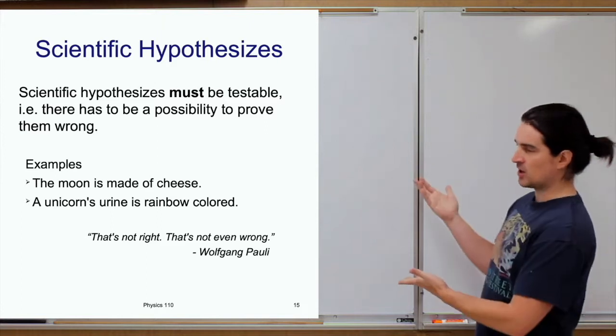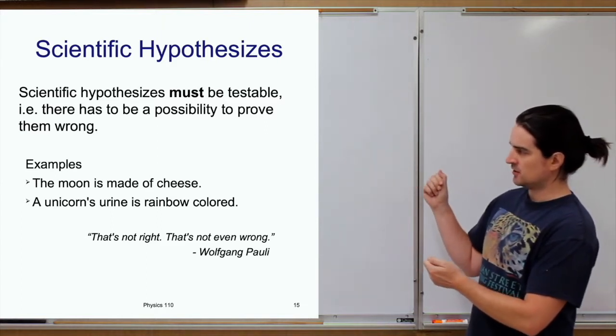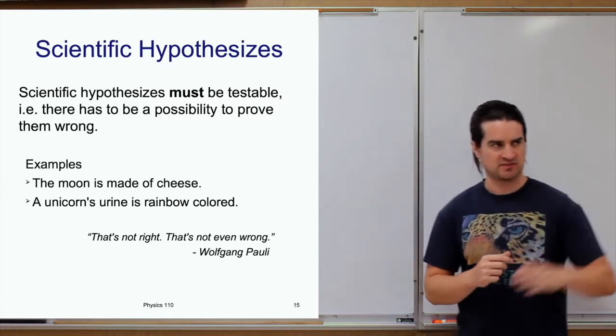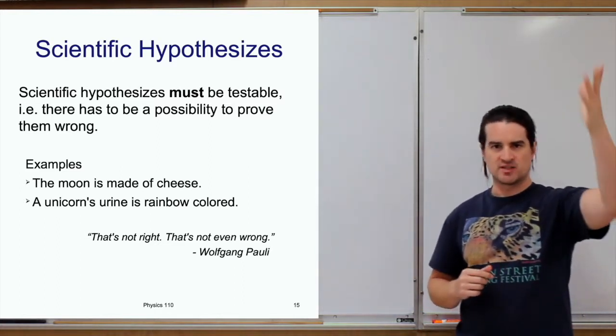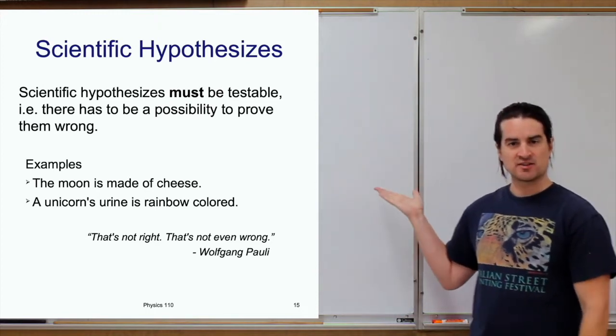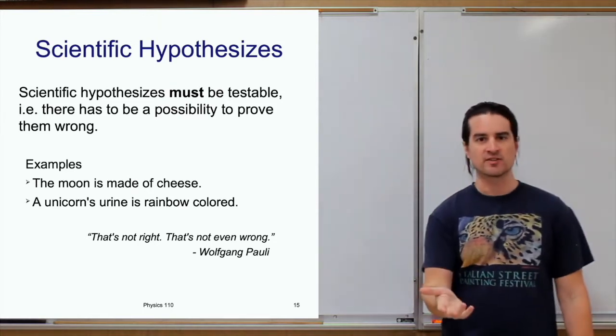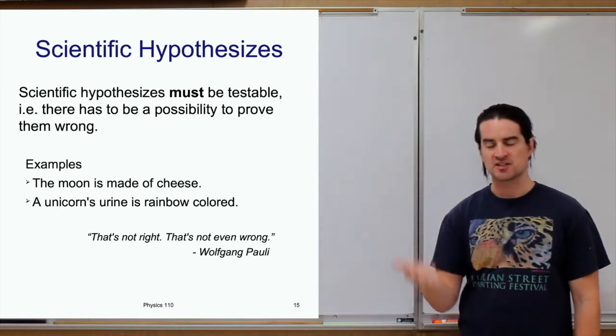Some examples of possible scientific hypotheses. One, you could say, well, the moon is made of cheese. That's my hypothesis. I've seen the moon, it looks like cheese, I'm going to guess it's cheese. That is actually a scientific hypothesis. As silly as it is, it's scientific because you're making a hypothesis, and that hypothesis is testable.